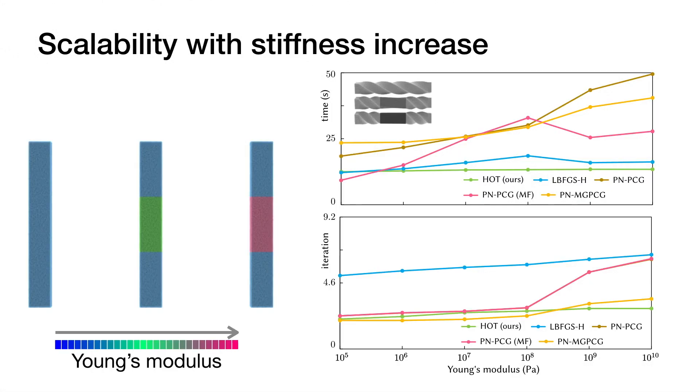Next, we demonstrate HOT's consistent performance over varying stiffnesses. In this heterogeneous material example, we increase the material stiffness of this bar's middle section from 10 to the 5th to 10 to the 10th. Newton-type methods quickly drop performance as stiffness increases, while HOT's timing curve stays nearly flat across these more and more ill-conditioned systems.